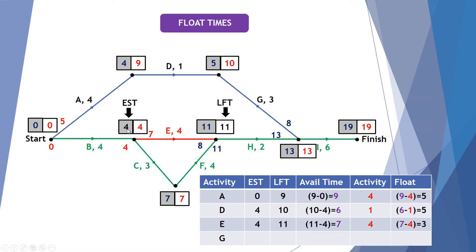E, earliest starting time of 4. Latest finishing time of 11. It means I've got 7 weeks to get this job done. I only require 4. So there's a float of 3. And finally, earliest starting time of 5 for G. Latest finishing time of 13. It tells me I've got 8 weeks available. I only need 3. So that gives me a float of 5.